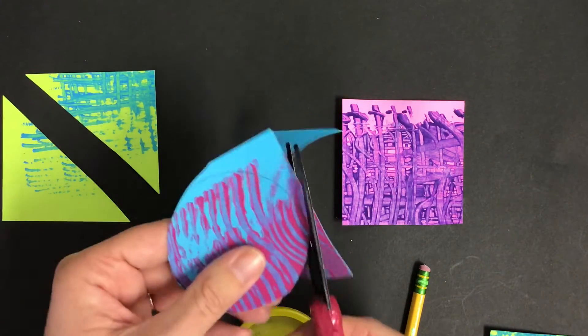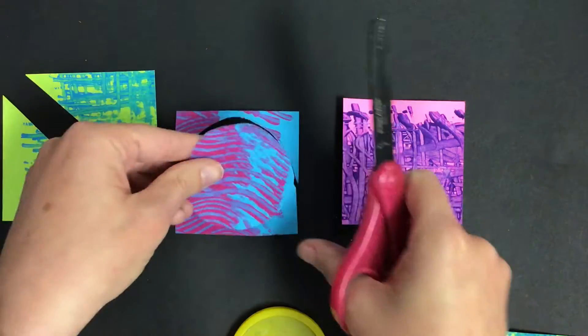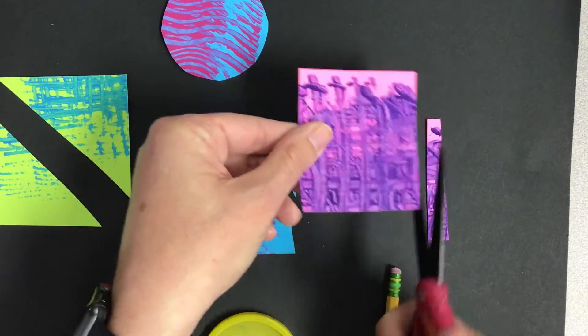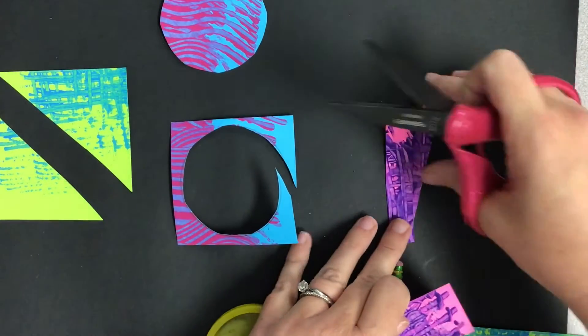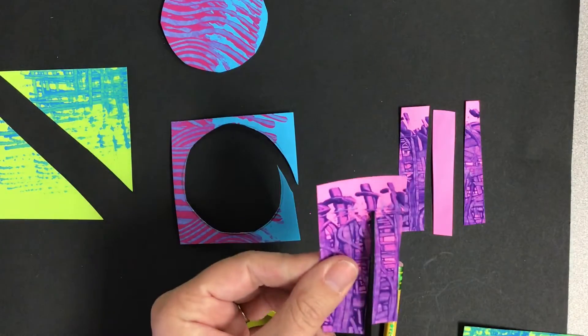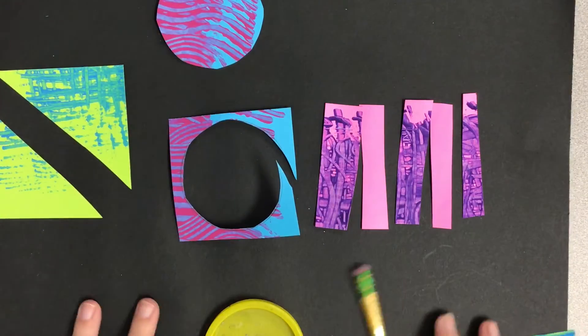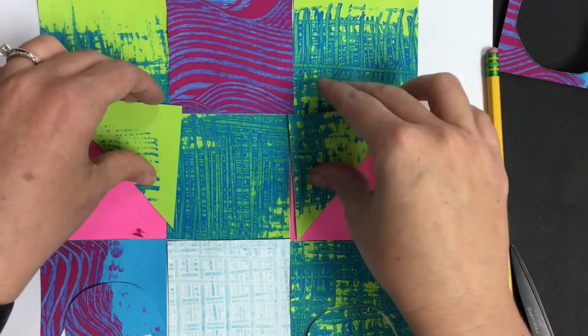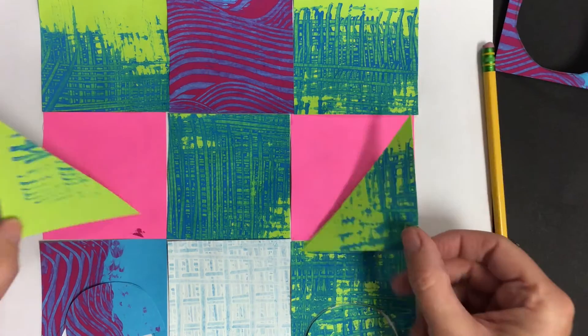You can also cut the square into strips. Those strips could be used on top of one square or several. Here I'm going to create a pattern by having one side plain and the other side painted paper. The opportunity is endless. Play around with your papers that you've created. See which is the best solution to create visual balance.